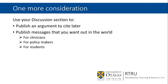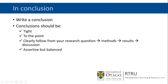One more consideration: it's useful to use the discussion section to publish arguments that you might want to cite later — for instance, in future research grants. It's useful to have arguments presented in a paper to justify future research ideas. Also, use your discussion section to put messages out there that you want in the world — these could be messages for clinicians, policy makers, or students. In conclusion, you want to write a conclusion and be conclusive. The conclusion might be a separate section in your thesis or journal article, or it might be integrated at the end of your discussion, but conclusions should be tight and to the point and follow clearly from your research question.